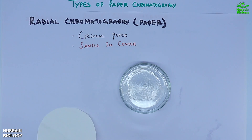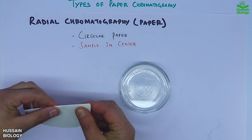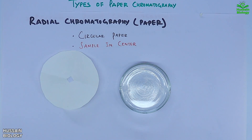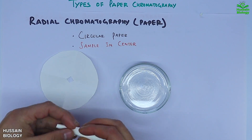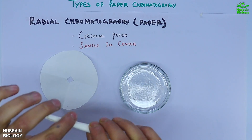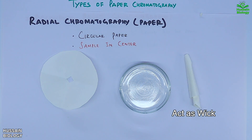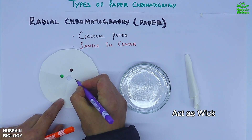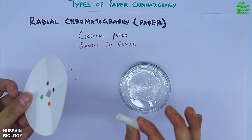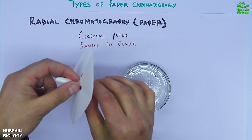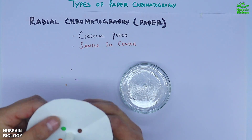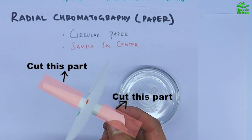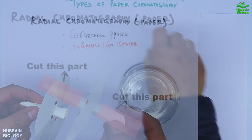We take a circular filter paper and a petri dish with methanol. We fold the circular filter paper and make a cut in the center to get a hole. Then we roll a piece of paper into a cylindrical shape to act as a wick. We put ink samples around the hole in the center, fit the cylindrical paper into the hole, cut the extra length above the circular paper, and leave half an inch of cylindrical paper below — which will be dipped into the petri dish.